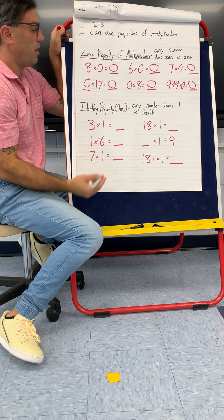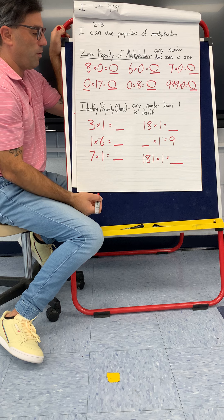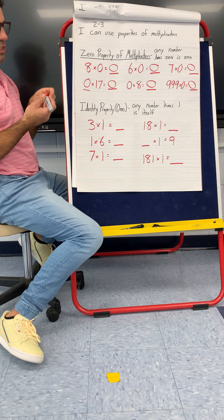So basically it's just like the number of groups times zero, so you have no groups of seventeen, so you have none. Or you have eight groups of zero.